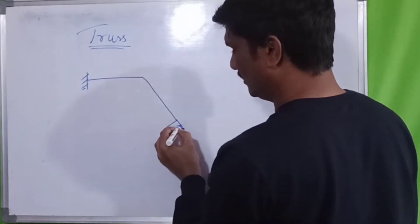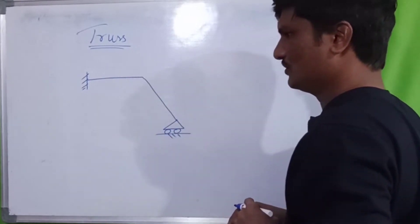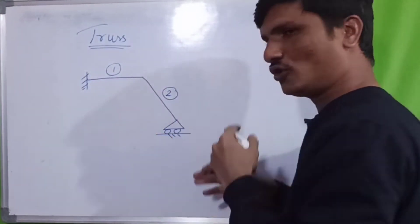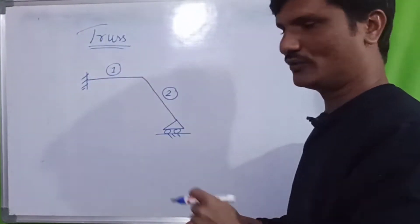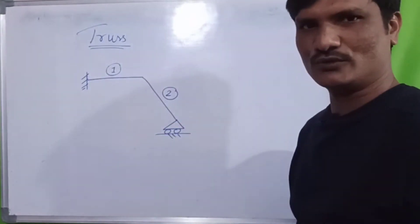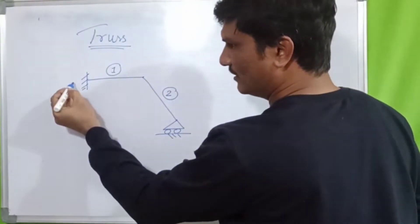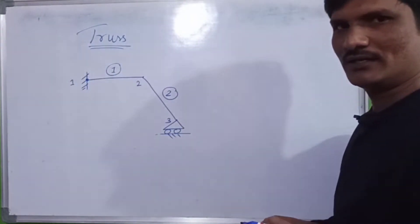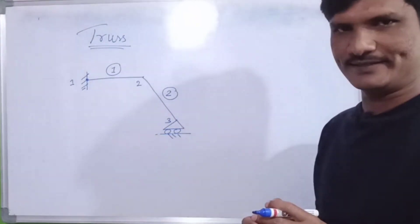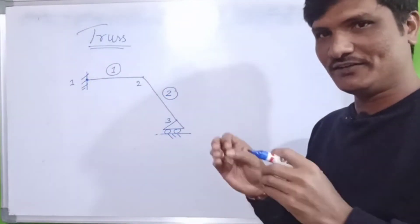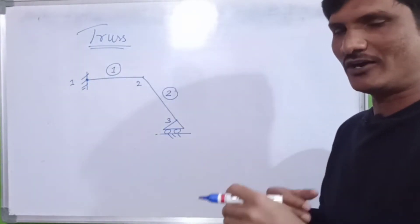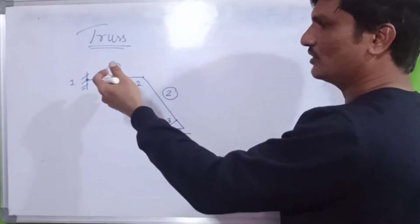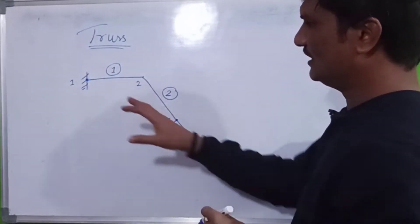For example, I have taken two elements here. In the question they might give the element numbering — they might mention this is element one or element two. If they have not mentioned it, you can choose according to your convenience. The node numbering can start with one, two, three — anything you can mention, that is your wish. However, if they have mentioned it particularly, then you have to follow that; you cannot change it, otherwise the problem will be affected.